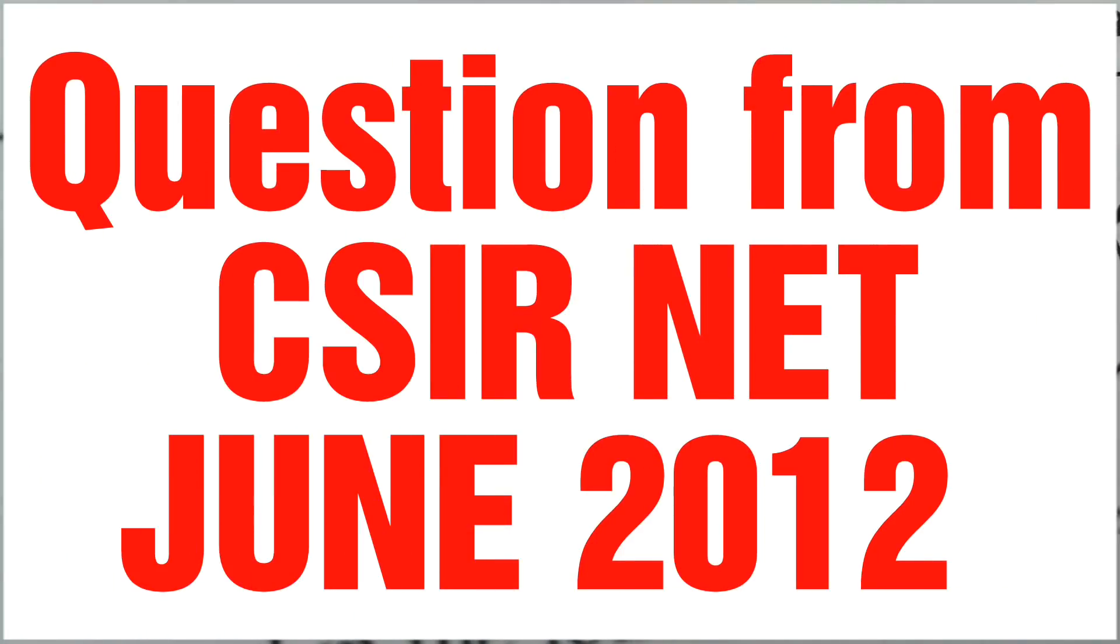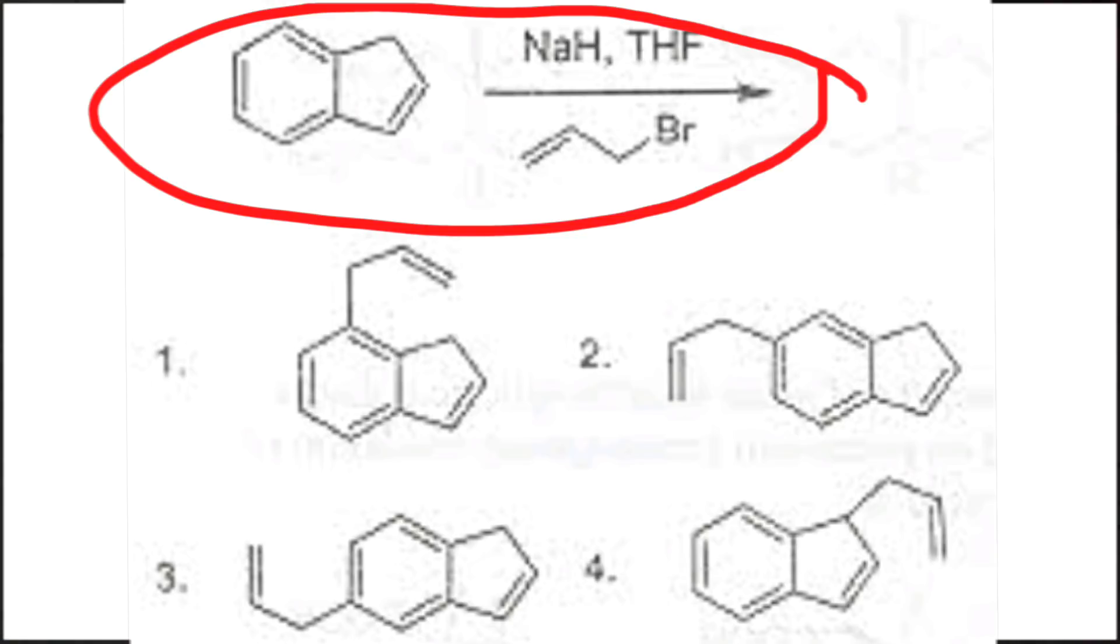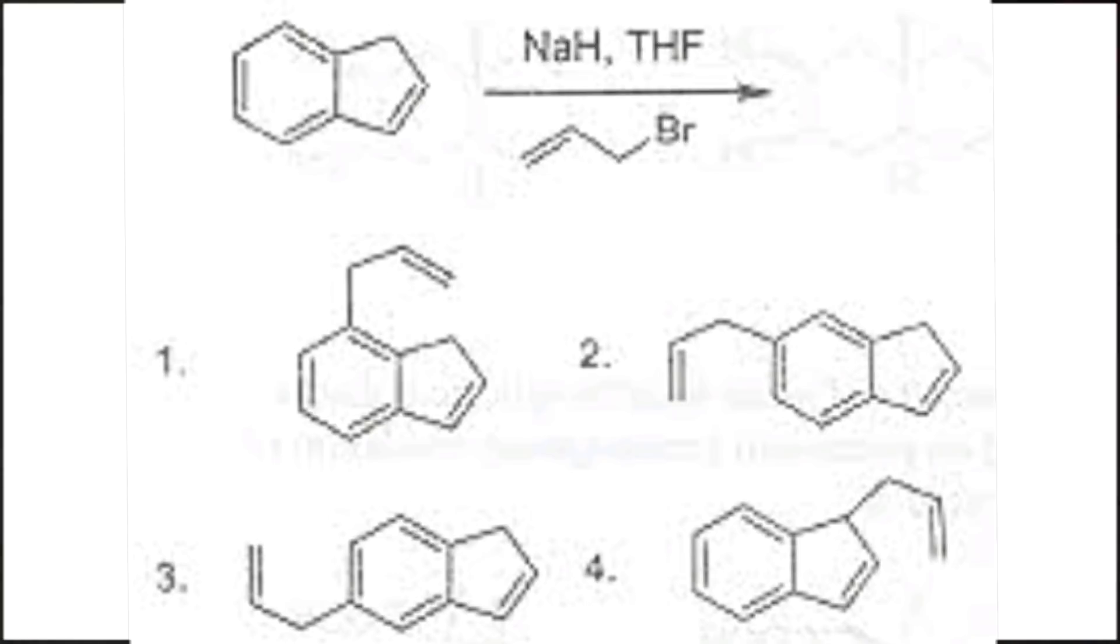Hello friends, in this video we will solve a question from June 2012. The major product formed in the following reaction is... This is benzocyclopentadiene.